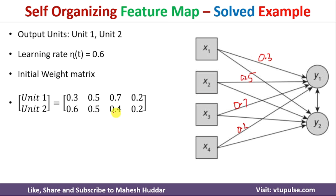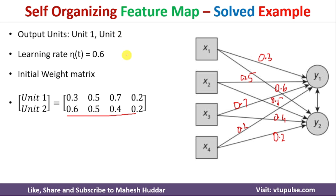Similarly, with respect to unit 2, the weights are 0.6, 0.5, 0.4, and 0.2. Given this data, we need to assign the training examples to one of these output units.